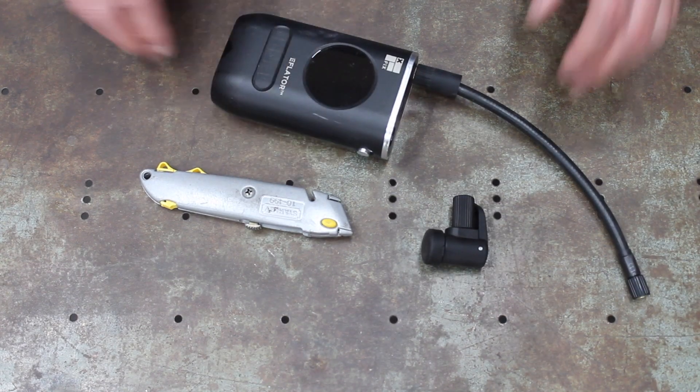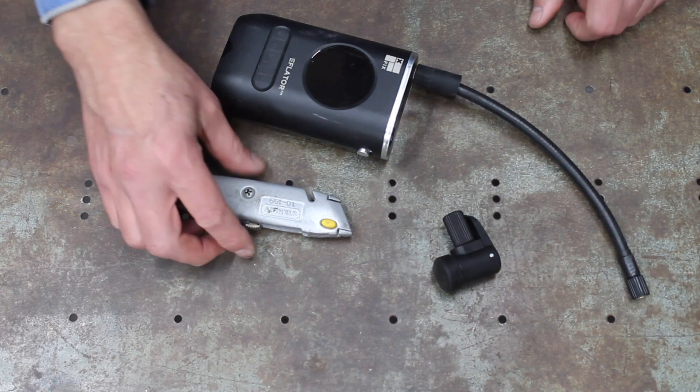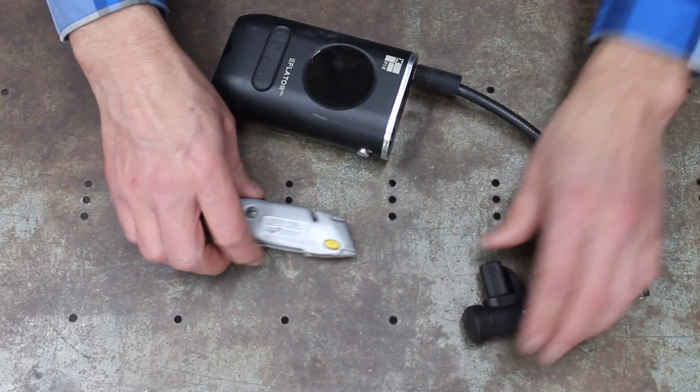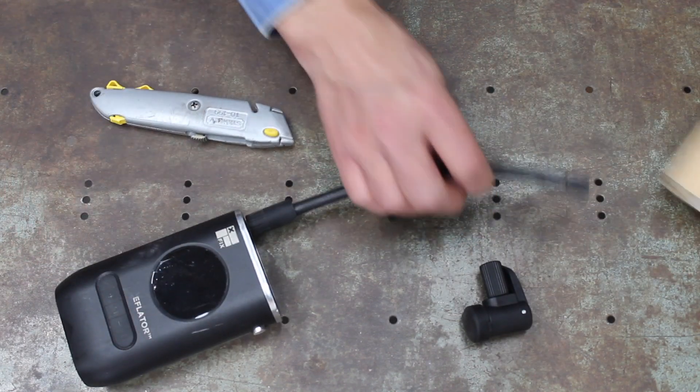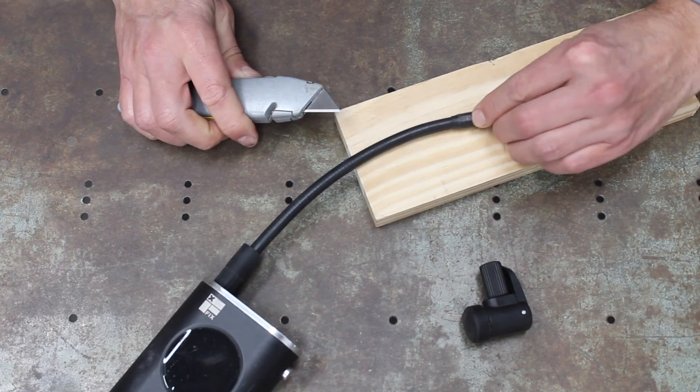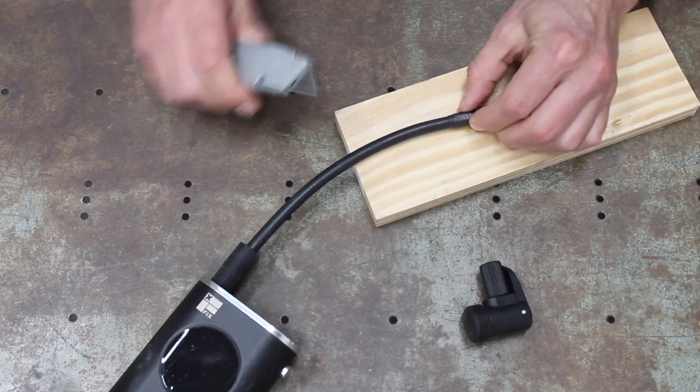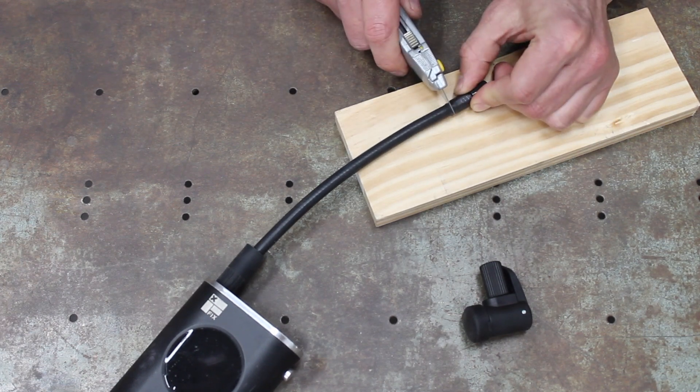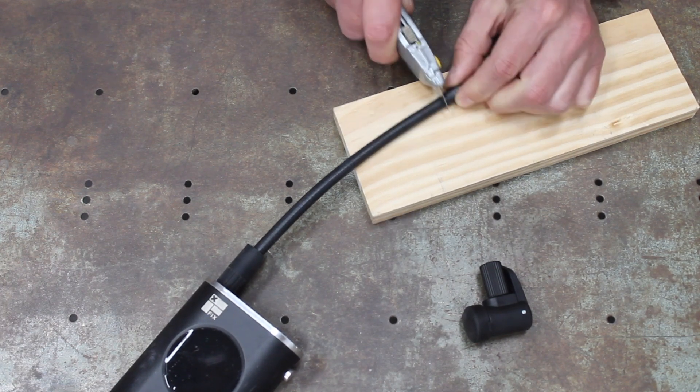Okay, so we've got our inflator, our valve chuck, and utility knife. The first thing you want to do is grab the utility knife and where you have this little protective shroud here, you want to cut just right at the end of that, right about there.